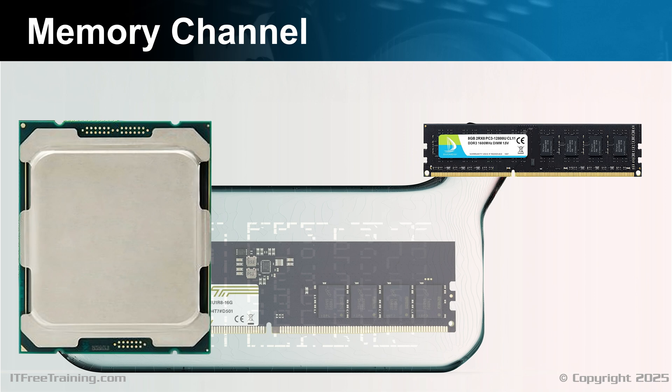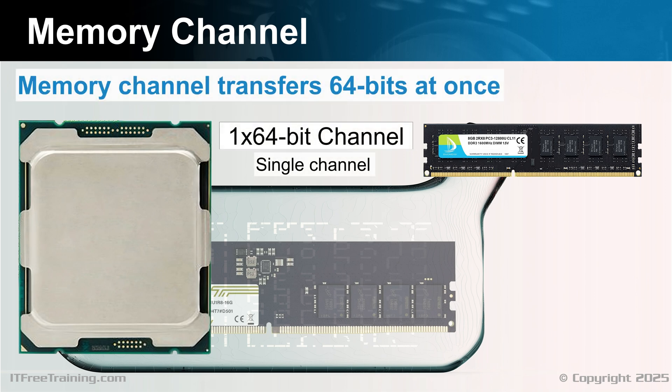In its most basic form, the memory bus is a single 64-bit channel. In the old days, this was causing a bottleneck, so something needed to be done. Modern CPUs have cache, which puts a lot less load on the CPU. Thus, this is not such a problem as it used to be. It also depends whether you are running a memory intensive application.